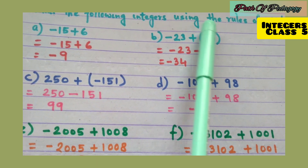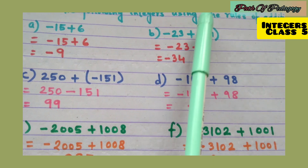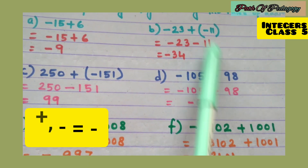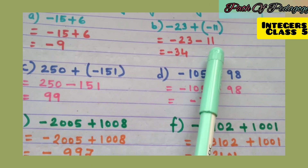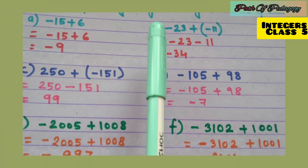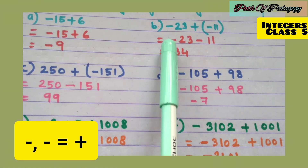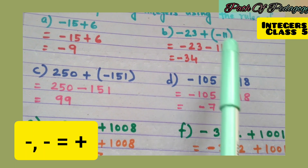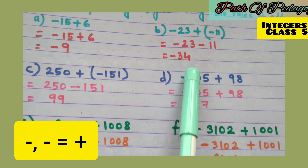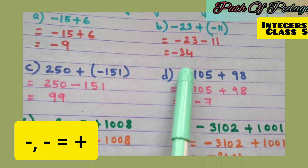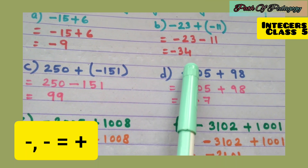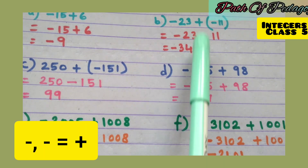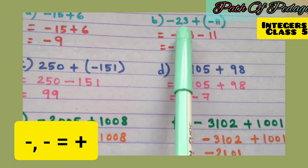Question b: −23 + (−11). Remove the bracket: −23 + (−11). Plus minus is always minus, giving −23 − 11. Minus minus is plus, so we add: 23 + 11 = 34. The bigger number is 23, its sign is minus, so the answer is −34.